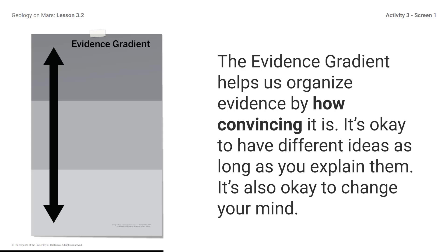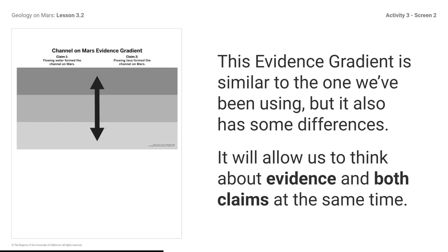It is also okay to change your mind. This evidence gradient is similar to the one we have been using, but it also has some differences. It will allow us to think about how evidence supports both claims at the same time. Today we are going to do some complex thinking — we will think about the strength of the evidence and both claims at the same time. After sorting the evidence by claim, we can then compare the evidence for each claim side by side using this special gradient.